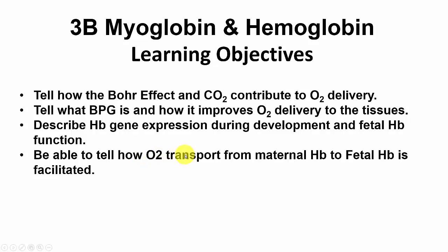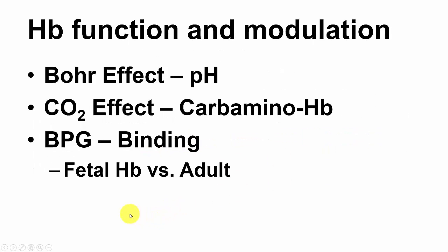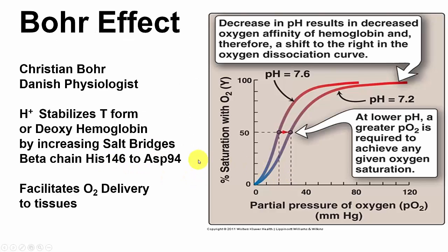We also need to be able to tell how O2 transport from maternal hemoglobin to fetal hemoglobin is facilitated. The Bohr effect covers hemoglobin function and modulation: the Bohr effect involves pH, CO2 effect is carbaminohemoglobin, and BPG binding — which is very important for fetal hemoglobin because fetal hemoglobin binds BPG less tightly than adult hemoglobin, allowing the transport of oxygen from the adult.